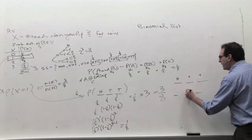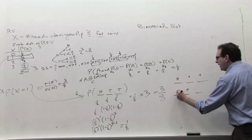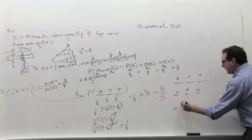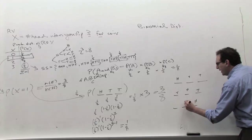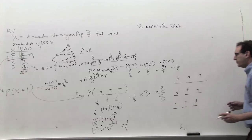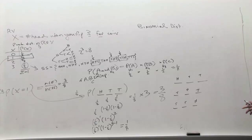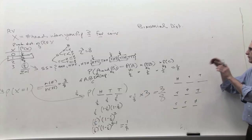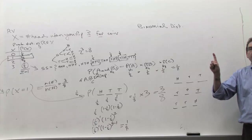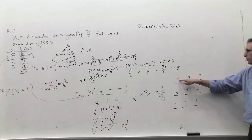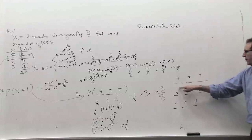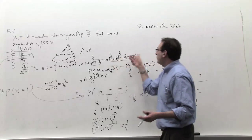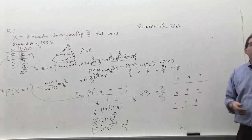Another way of doing this is the head can be here and the tails can be here. And the third way of doing it is the head can be here and the tails can be here. So we can physically see how you can flip three coins and get exactly one head. The answer is three different ways — either this way, this way, or this way. They all represent exactly one head among the three coins.